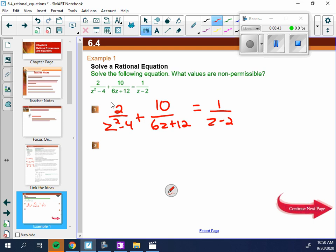And so we're just going to factor our denominators. So 2 over z minus 2 and z plus 2. That one's difference in squares.